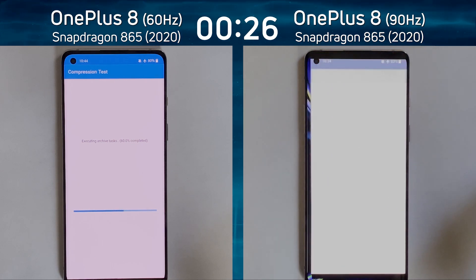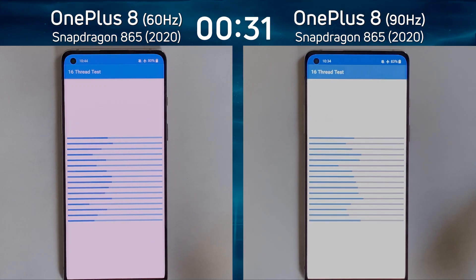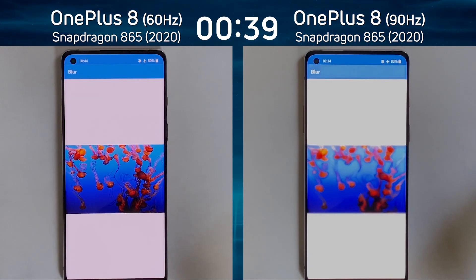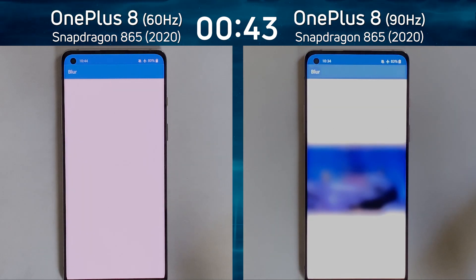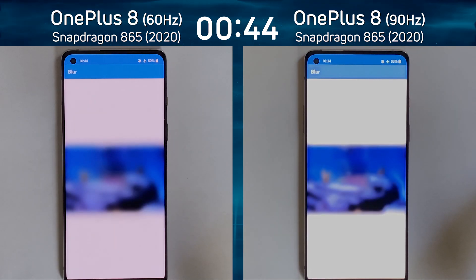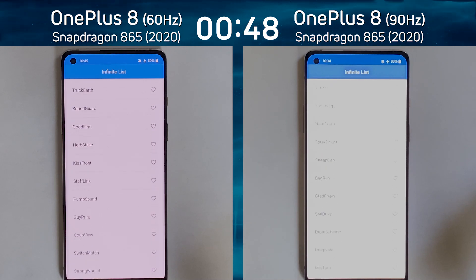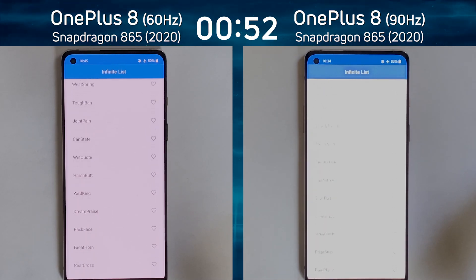If you're looking at a photograph, it will be updated at 60Hz and 90Hz, but there will be nothing changing on the screen. As we are now into the 16th thread test, I do think I saw a minor lead there by the OnePlus 8 at 90Hz as we come to the end of the 16th thread test. We're into the blur test. The OnePlus 8 with the 60Hz is slightly behind. The 90Hz version is still slightly ahead at this moment.